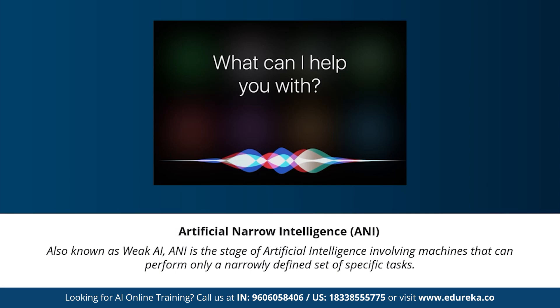Artificial narrow intelligence, also known as weak AI, is a stage of artificial intelligence that involves machines that can perform only a narrowly defined set of specific tasks. At this stage, the machines don't possess any thinking ability — they just perform a set of predefined functions. Examples of weak AI include Siri, Alexa, AlphaGo, Sophia, and self-driving cars. Almost all AI-based systems built to date fall under the category of weak AI or artificial narrow intelligence.